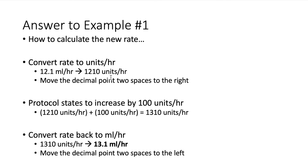The relationship between mls per hour and units per hour is simply moving the decimal point two spaces to the right, so 12.1 mls per hour converts to 1210 units per hour. Now that we have the rate in units per hour, we can increase it by 100 units per hour, just like the directions state. So 1210 plus 100 equals 1310 units per hour. To convert back to mls per hour, we move the decimal point two spaces to the left, giving us 13.1 mls per hour — that's our new rate.